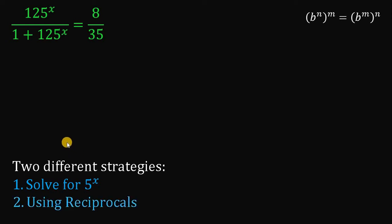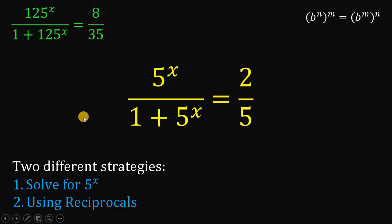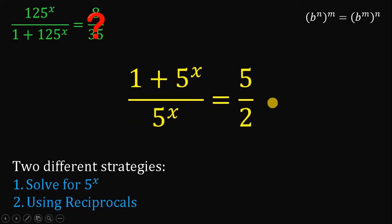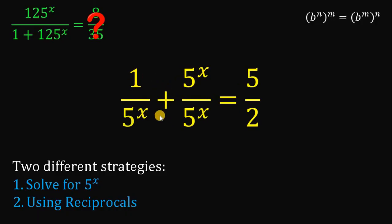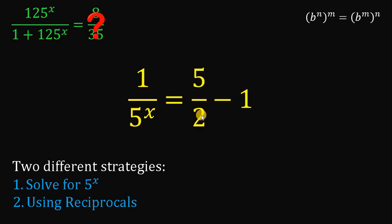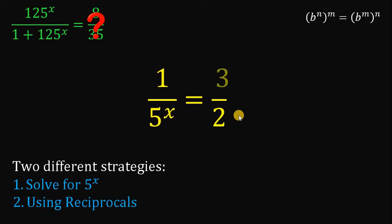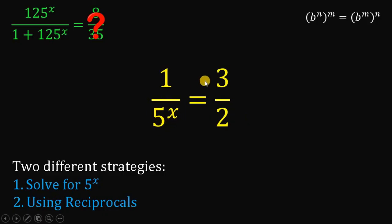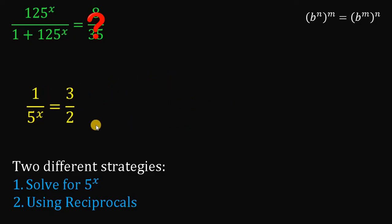Now let's use our second strategy using reciprocals, supposing we don't yet know the answer is 8 over 35. Taking the reciprocal on both sides of the given equation, and using the concept of similar fractions on the left-hand side, this can be written as 1 over 5 raised to x plus 5 raised to x over 5 raised to x, which equals 1. Subtracting 1 from both sides, 5 over 2 minus 1 gives us 3 over 2. Therefore, we have the value of 1 over 5 raised to x equals 3 over 2. Let's set aside this result.